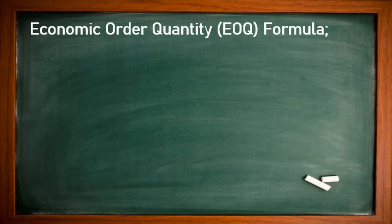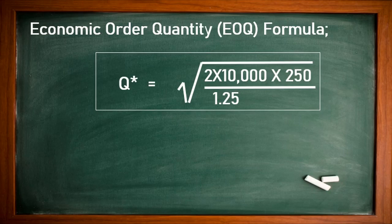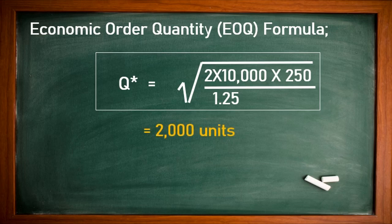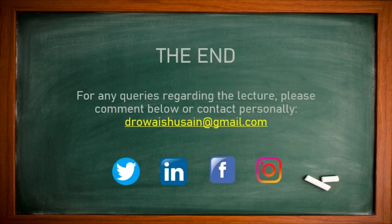Putting the values into the EOQ formula: Q = square root of (2 × 10,000 × 250 / 1.25). The result is 2,000 units. So the EOQ tells us that to minimize cost, the firm needs to buy 2,000 units in each order.